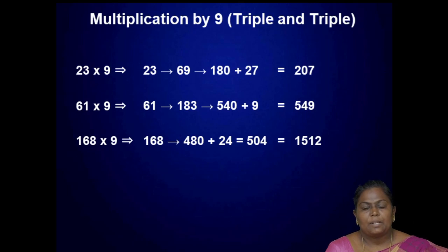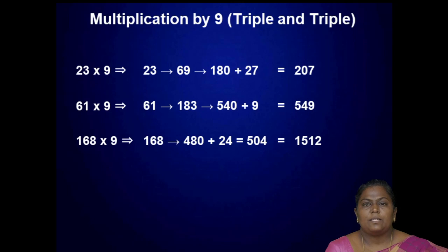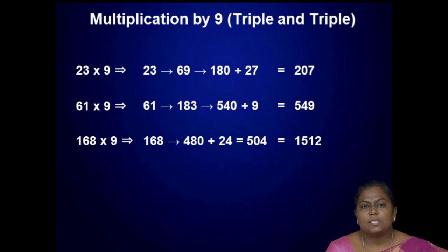Next, multiplication by 9. Since 9 means 3 into 3, we have to triple the number twice. For example, 23: triple to get 69, then triple 69 to get 207. And 61: triple to get 183, then triple 183 to get 549.